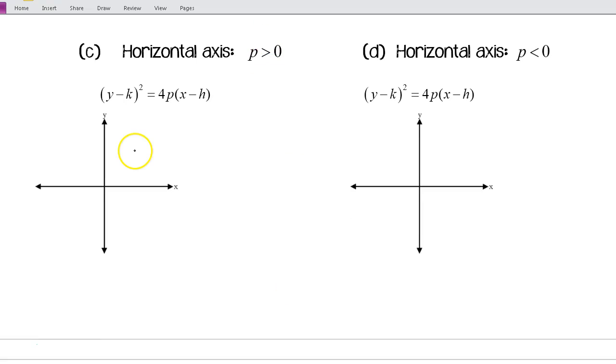Over here, p is positive. Picking an arbitrary vertex, focus inside, directrix outside, axis of symmetry. Remember, this distance here is p, and this distance here is p.